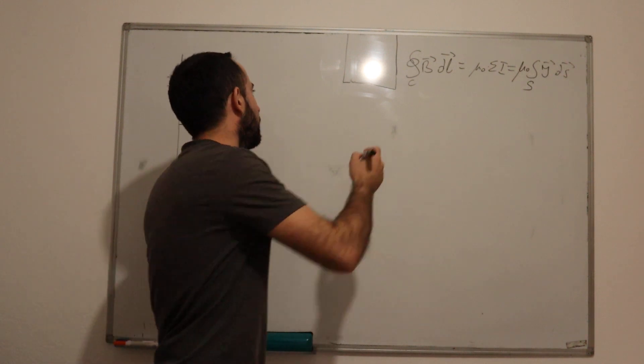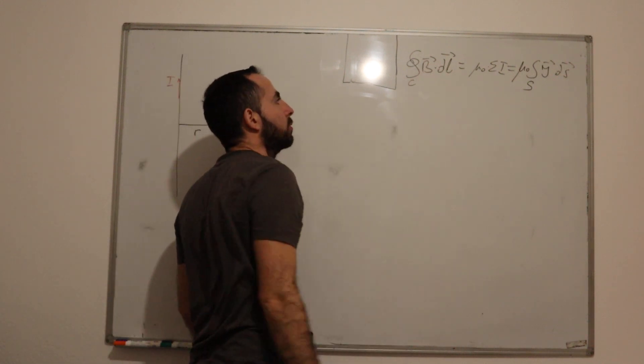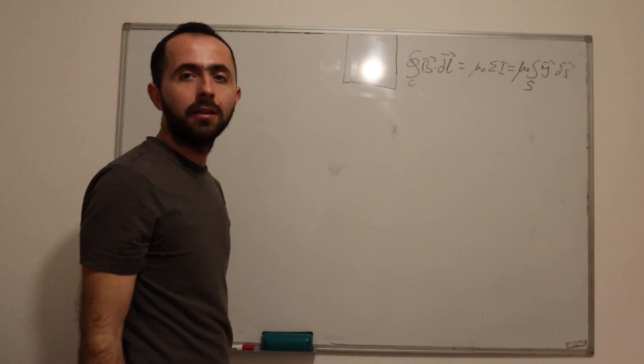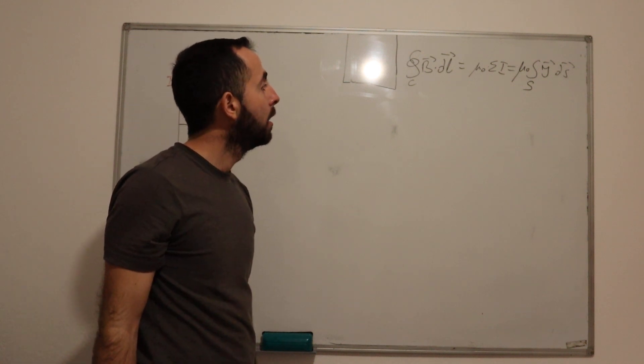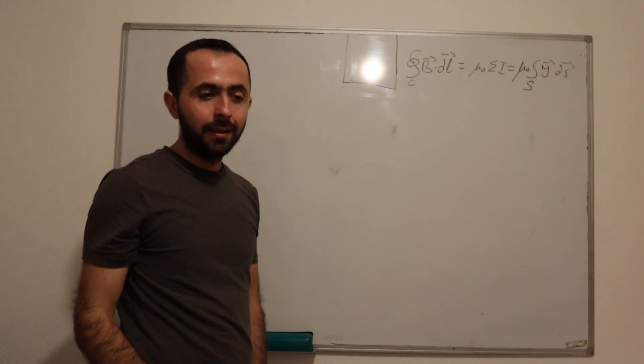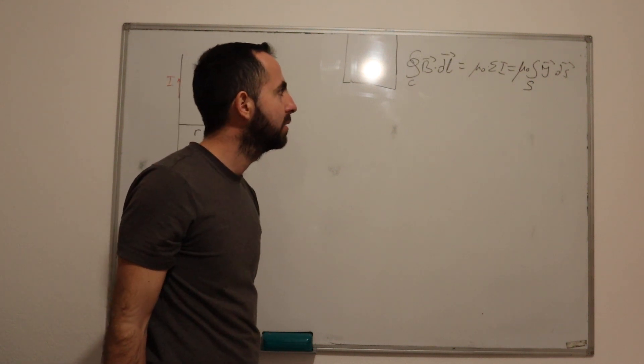where here we have the product of two vectors, is equal to the magnetic permeability μ₀ for air times the algebraic sum of our currents.